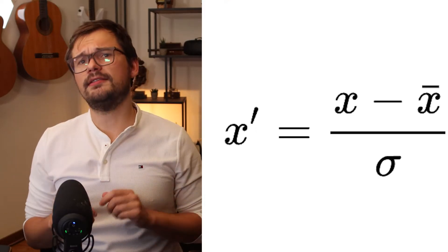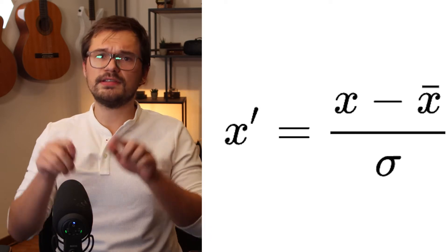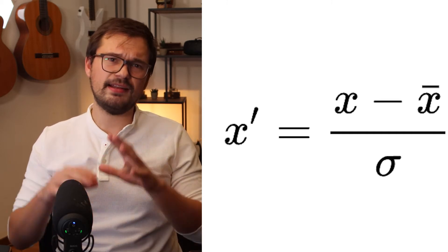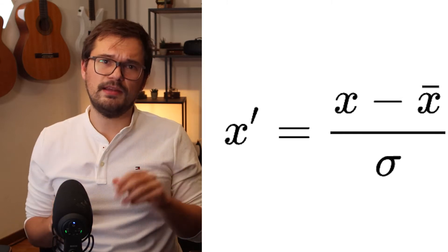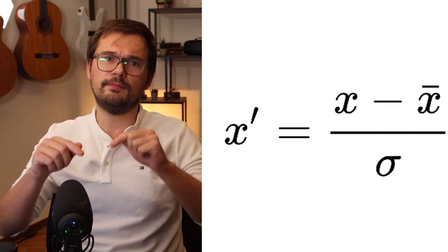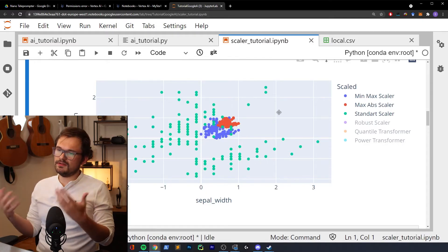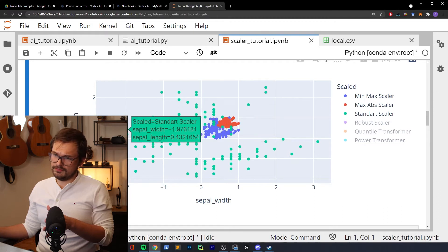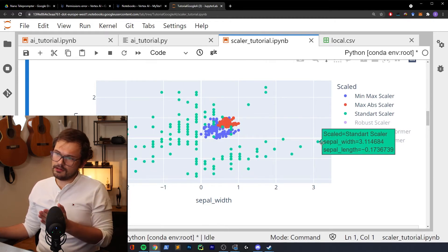The standard scaler is the most common type, centering all data around 0 and scaling in steps of standard deviation. It assumes you are working with normally distributed data and that outliers are not too extreme. The formula subtracts the mean and divides by the standard deviation. The robust scaler is similar but designed to handle outliers — instead of subtracting the mean you subtract the median, and instead of dividing by the standard deviation you scale according to the interquartile range.